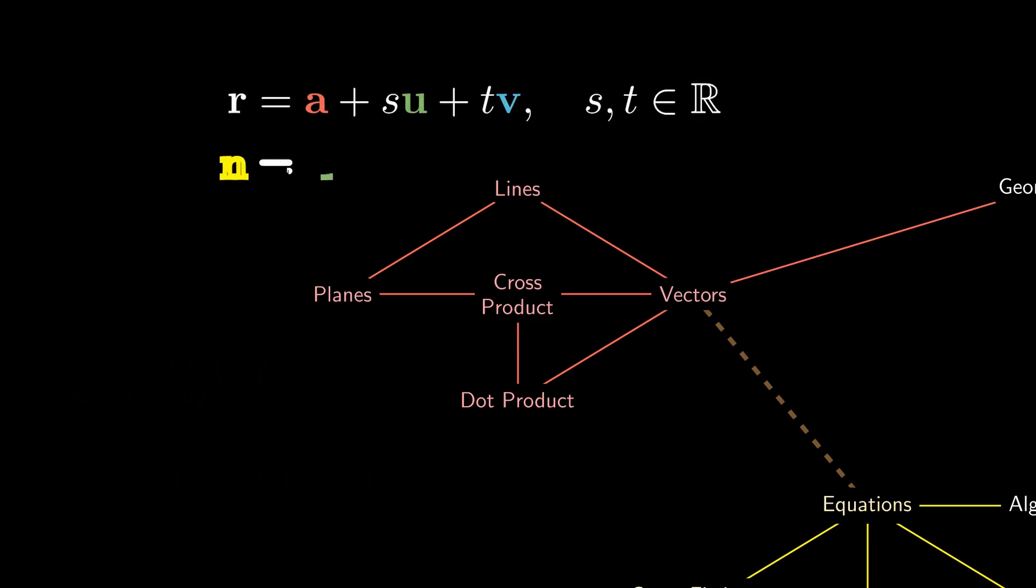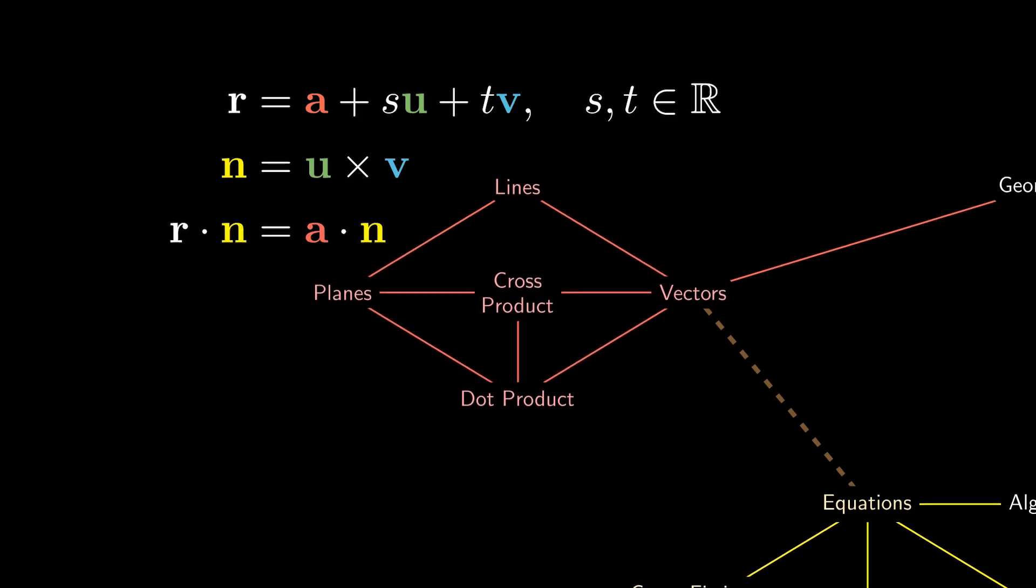and using both products allows us to describe the plane in a much cleaner manner. We'll calculate the vector that's perpendicular to both u and v, and it can be shown that the plane will have the following scalar product equation: r·n = a·n. Roughly speaking, this tells us the direction that the plane is perpendicular to.